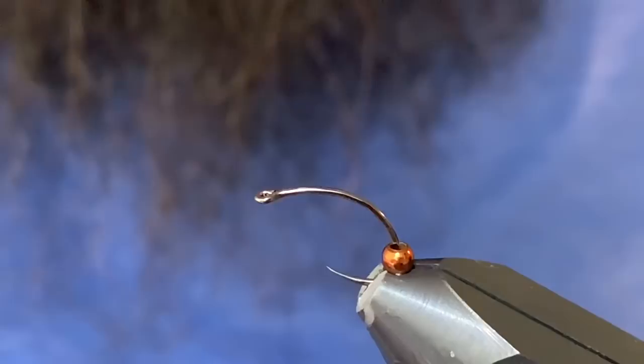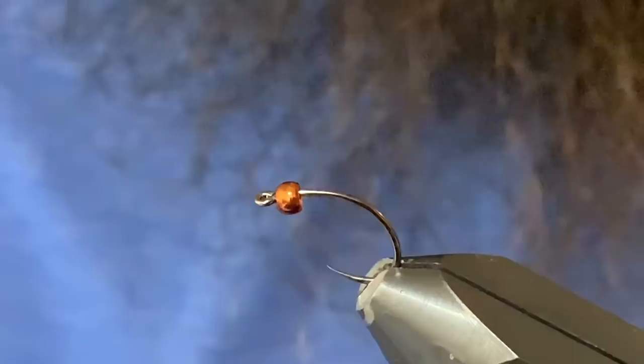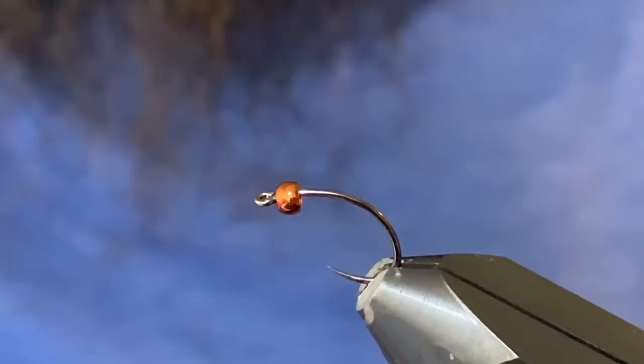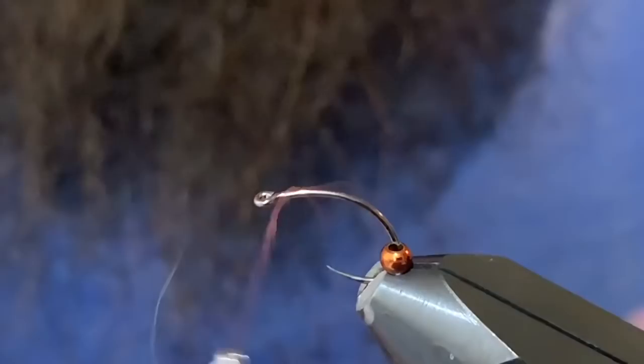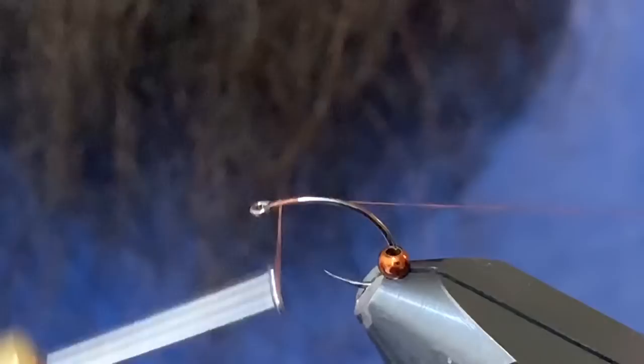The hook I've got in the vise is a size 12 Protire Czech nymph hook, and I've got a coffee brown 764 anodized bead. I'm going to tie with some rusty brown tying thread.